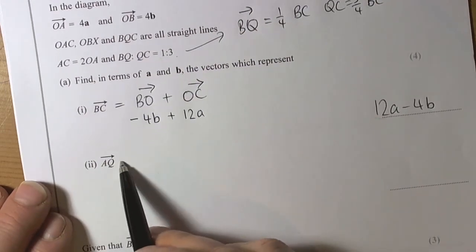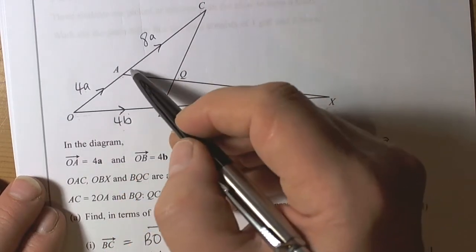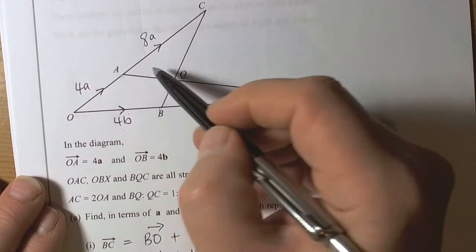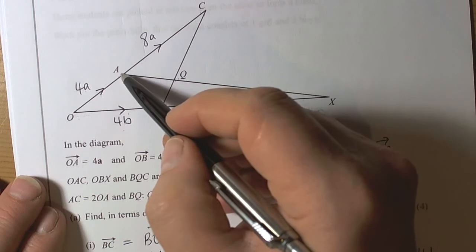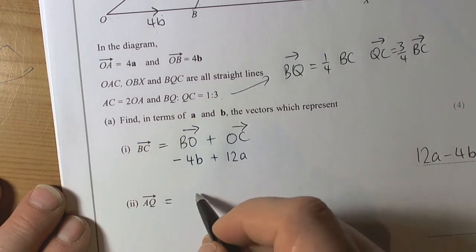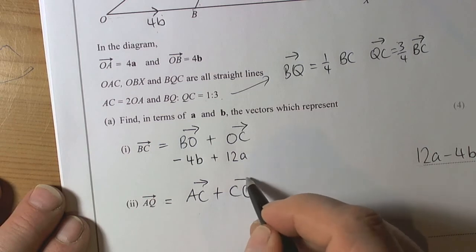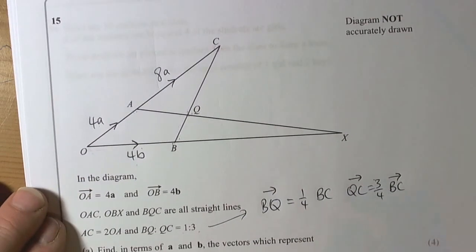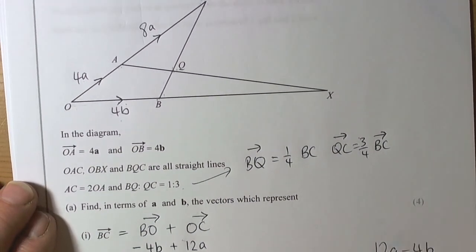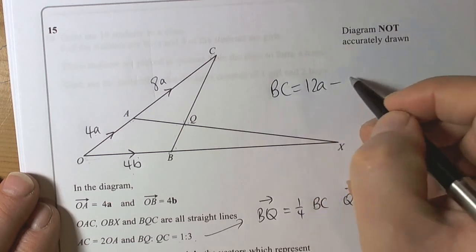Then we need the journey from A to Q. The quickest way of getting from A to Q is to go A to C and then C to Q. So A to Q equals A to C plus C to Q. We've just worked out that BC equals 12a minus 4b.